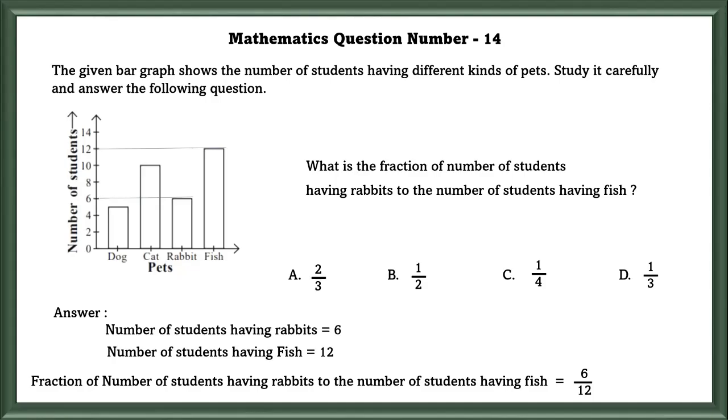So, fraction of number of students having rabbits to the number of students having fish is equal to 6 by 12, which is equal to 1 by 2.